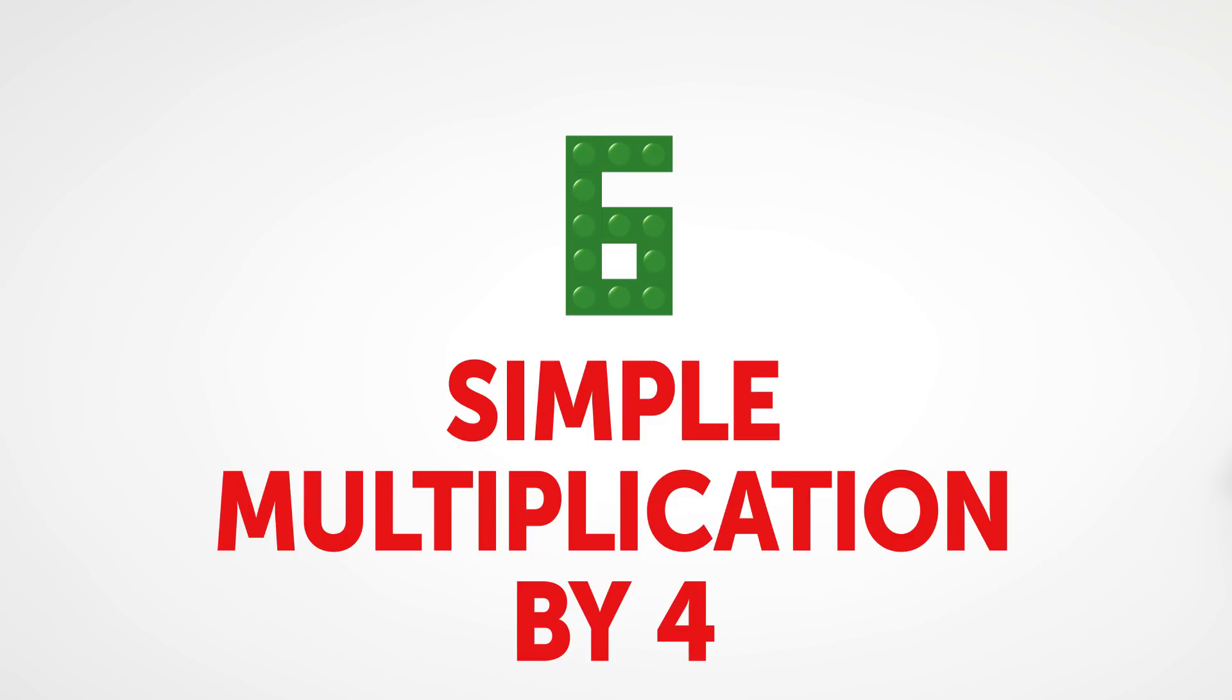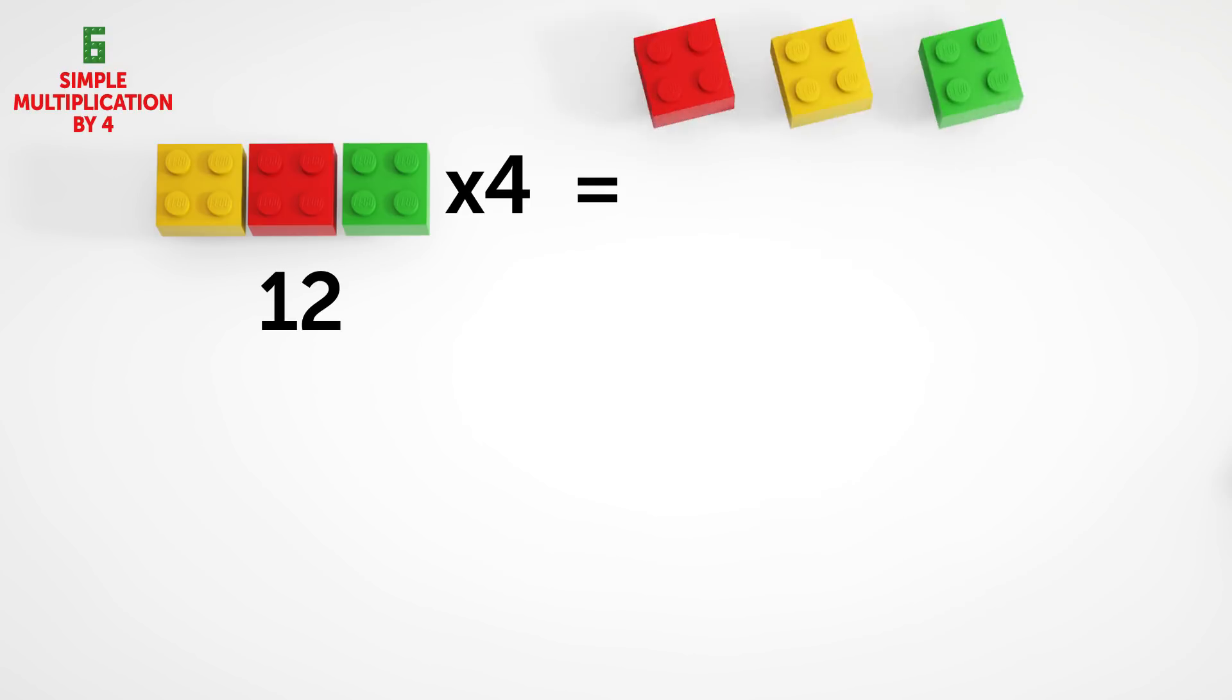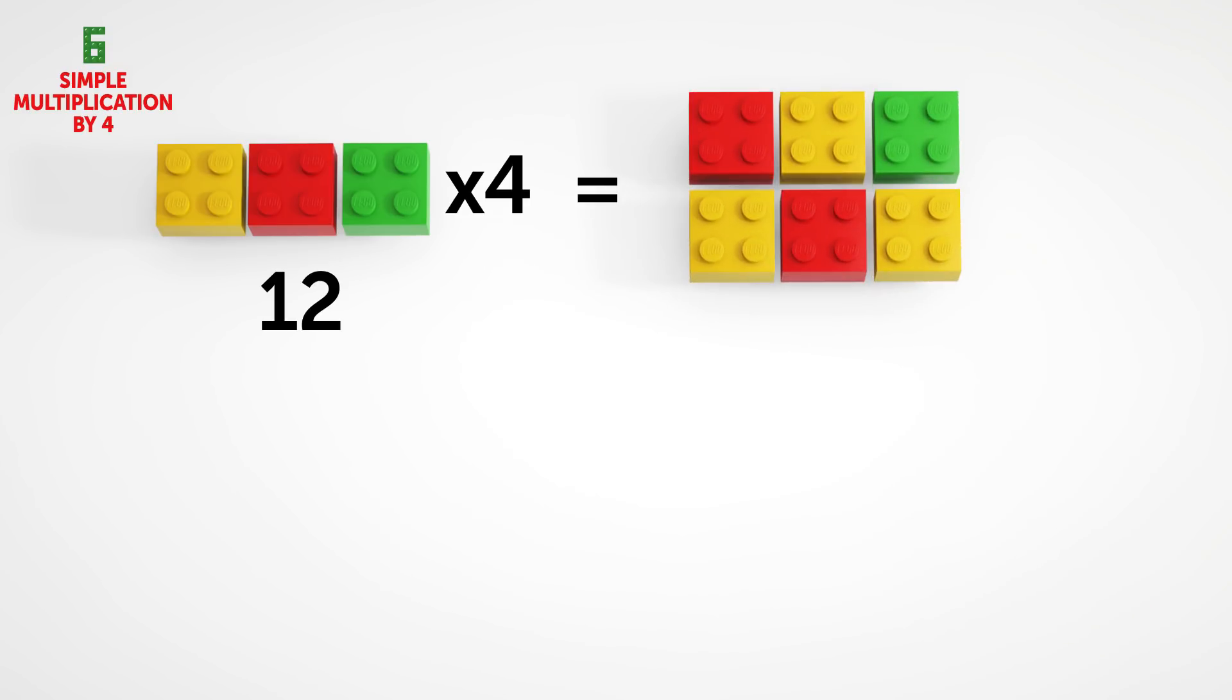6. Simple multiplication by 4. The trick here is to multiply your number by 2, and then multiply it by 2 again.